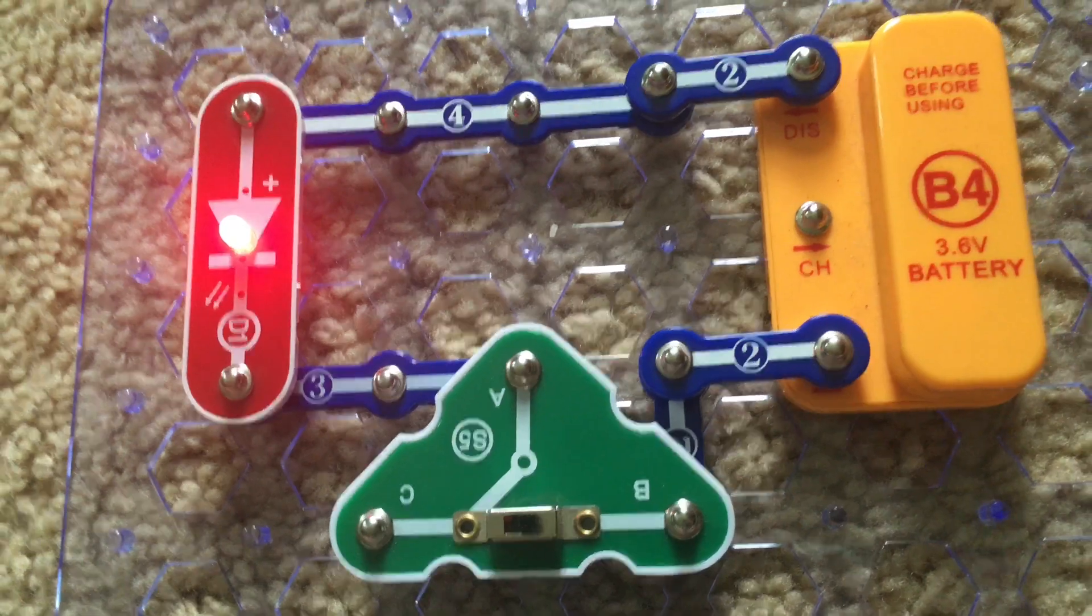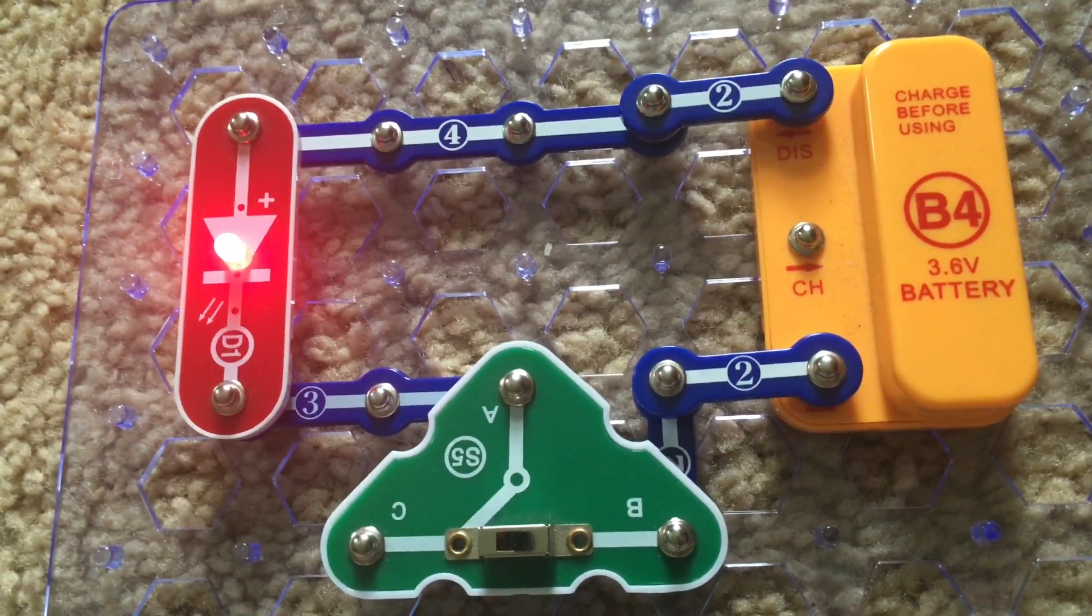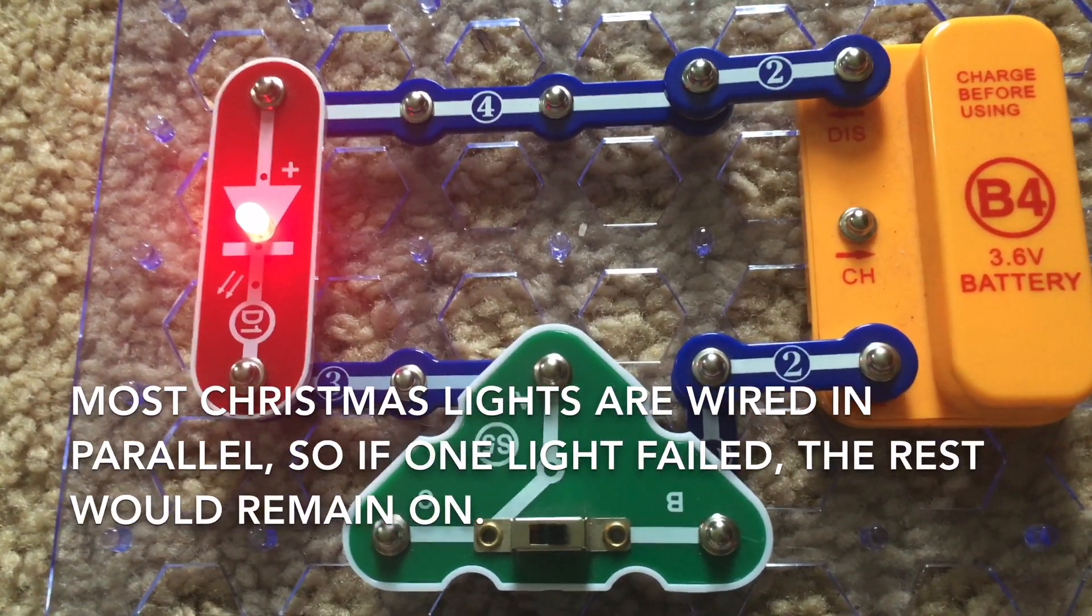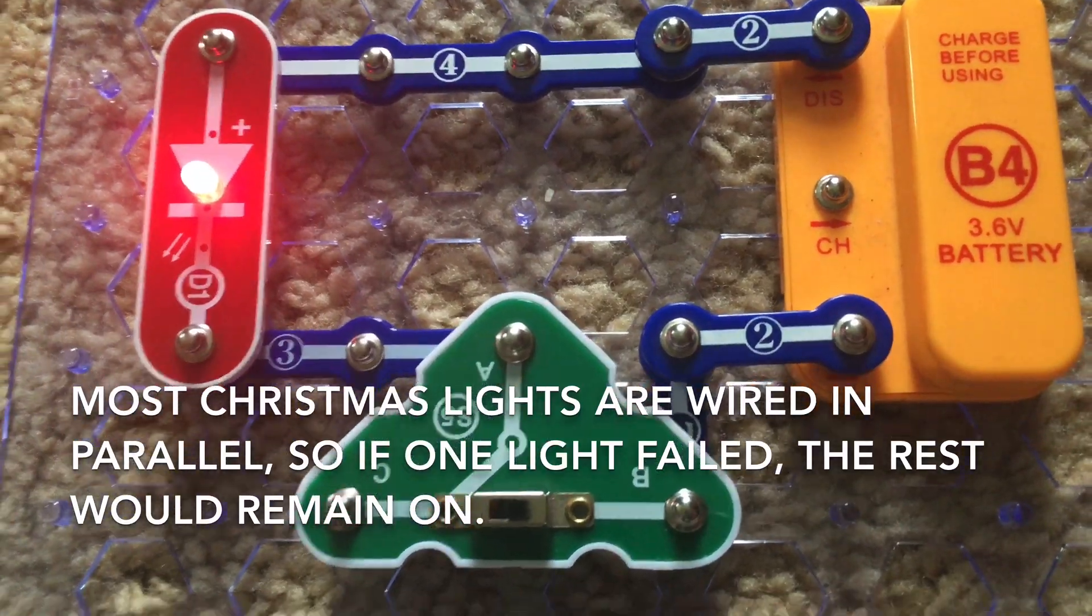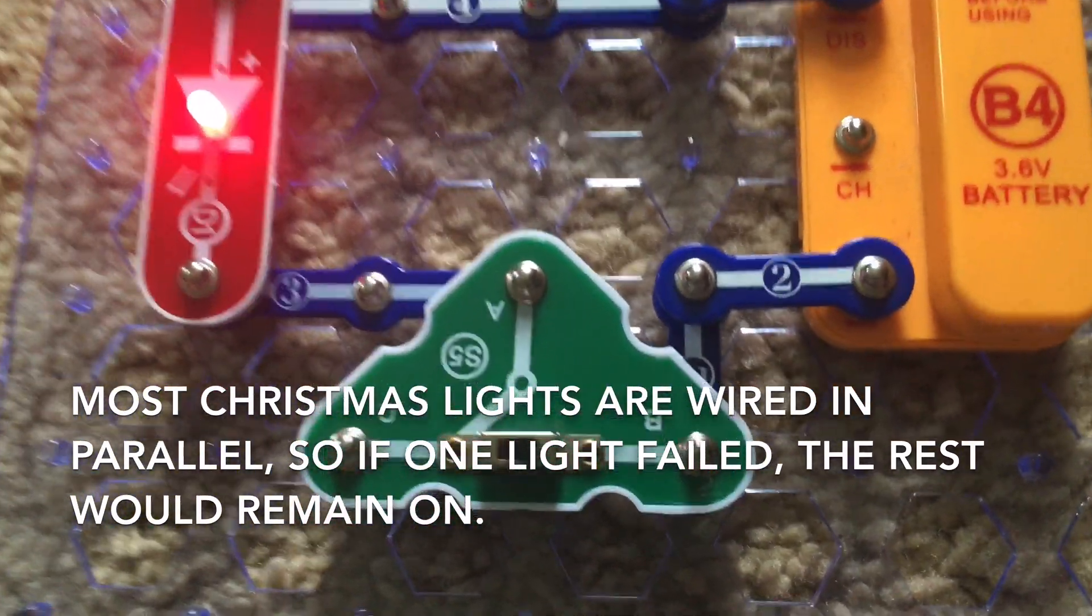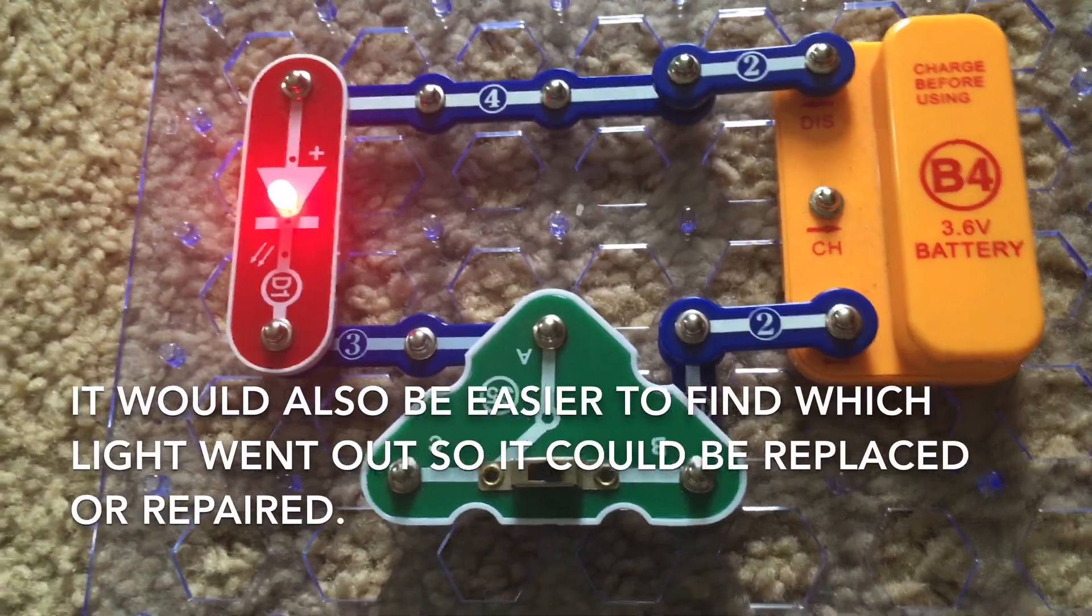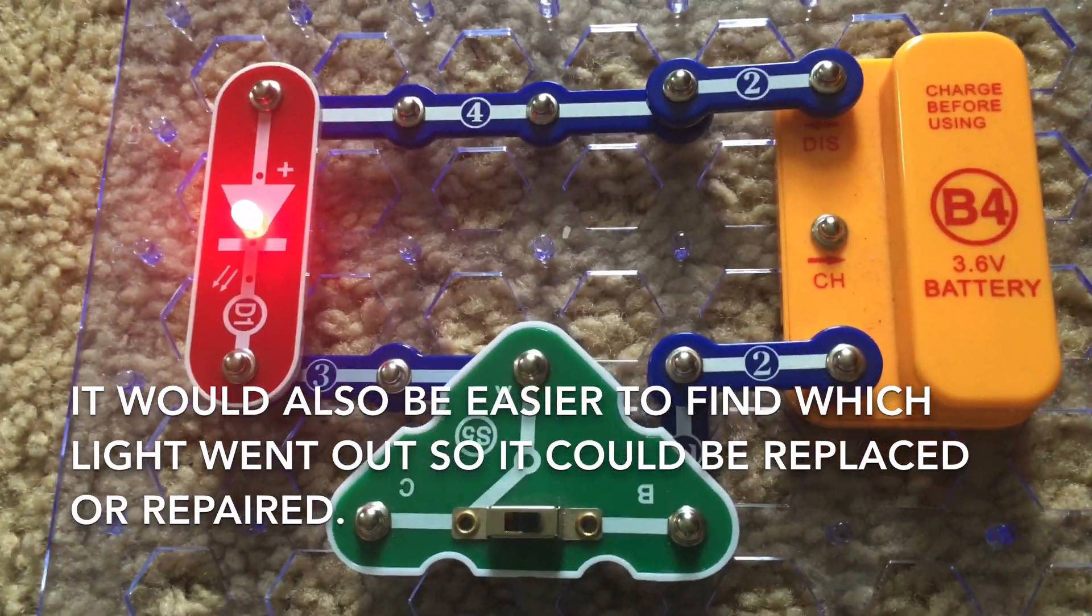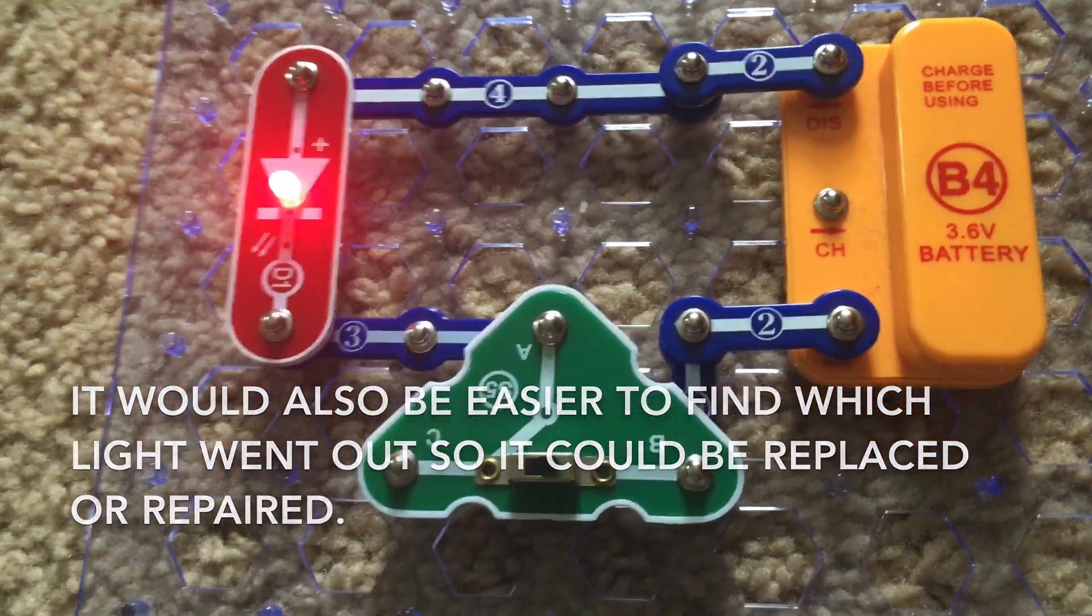And most Christmas lights, for example, consist of parallel circuits because if one of the lights was to fail, the others would remain on and it would also be easier to find out which light failed so that it could be replaced.